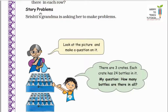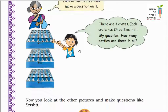Now our next topic is story problems. Shristi ki dadi hai jo Shristi ko problem banane ke liye keh rahi hai. She says: look at the picture and make a question on it. So Shristi picture mein dekhne ke baad bolti hai: there are 3 carrots and each carrot has 24 bottles in it. So Shristi ka question hai: how many bottles are there in all? — in sub boxes mein total kitni bottles hain.